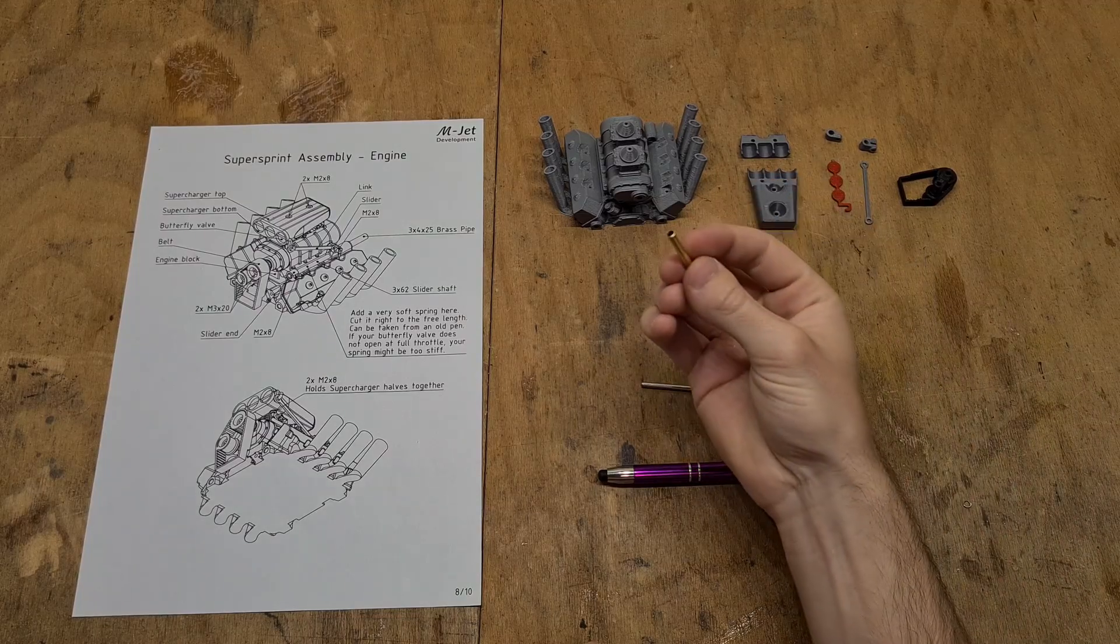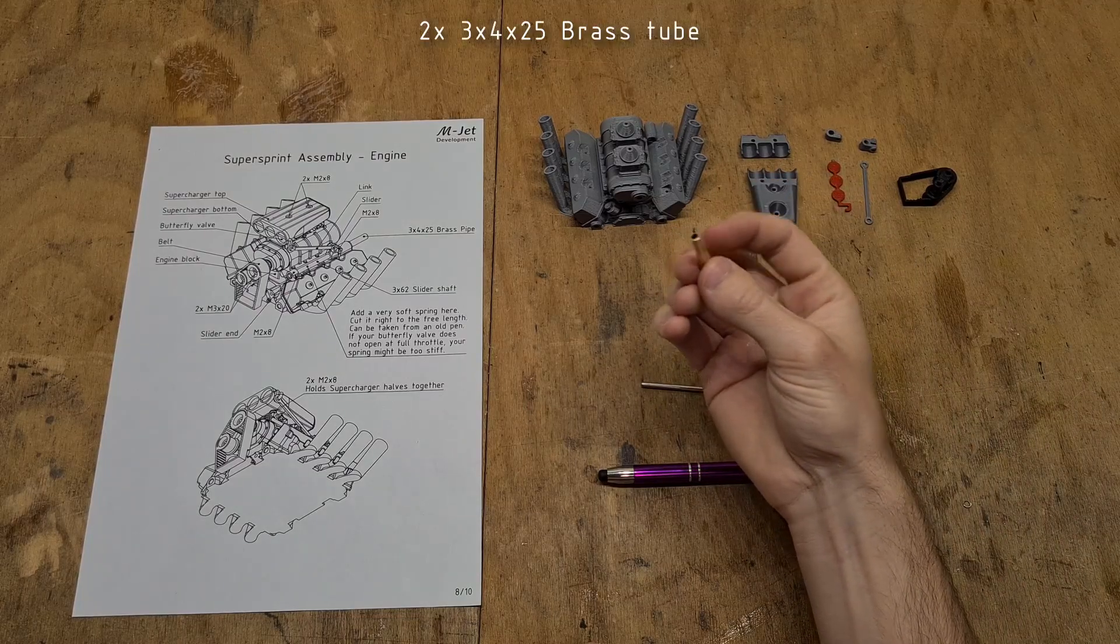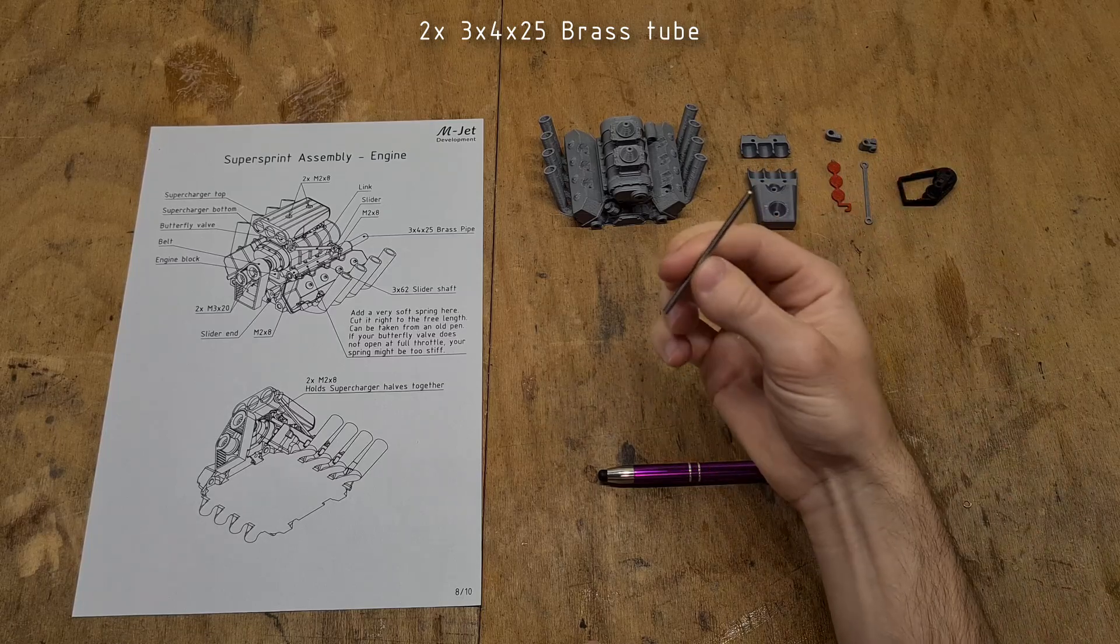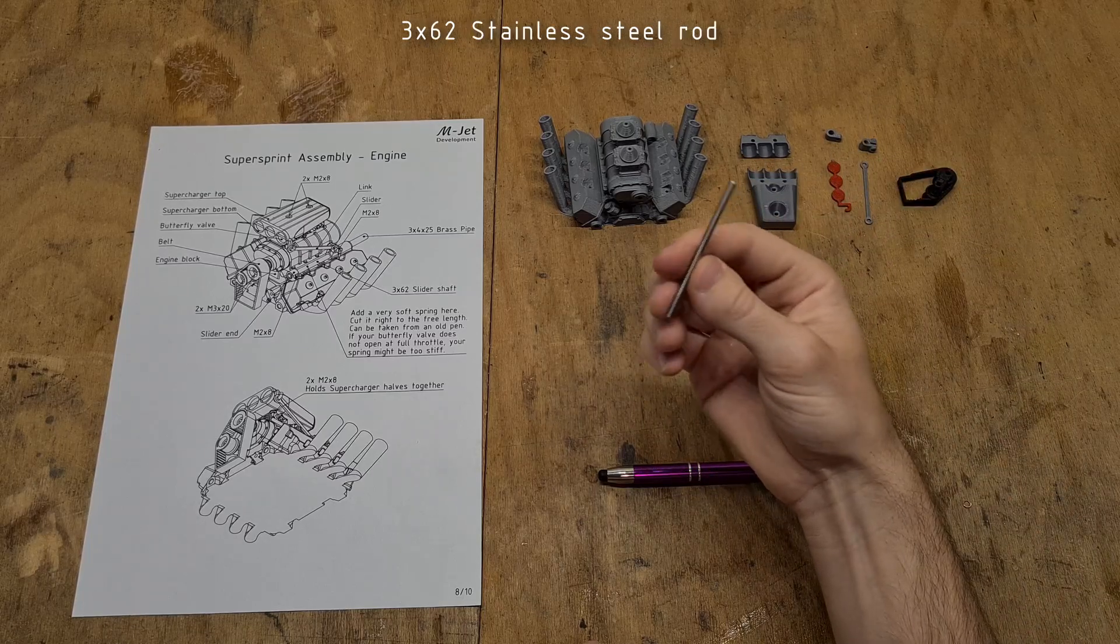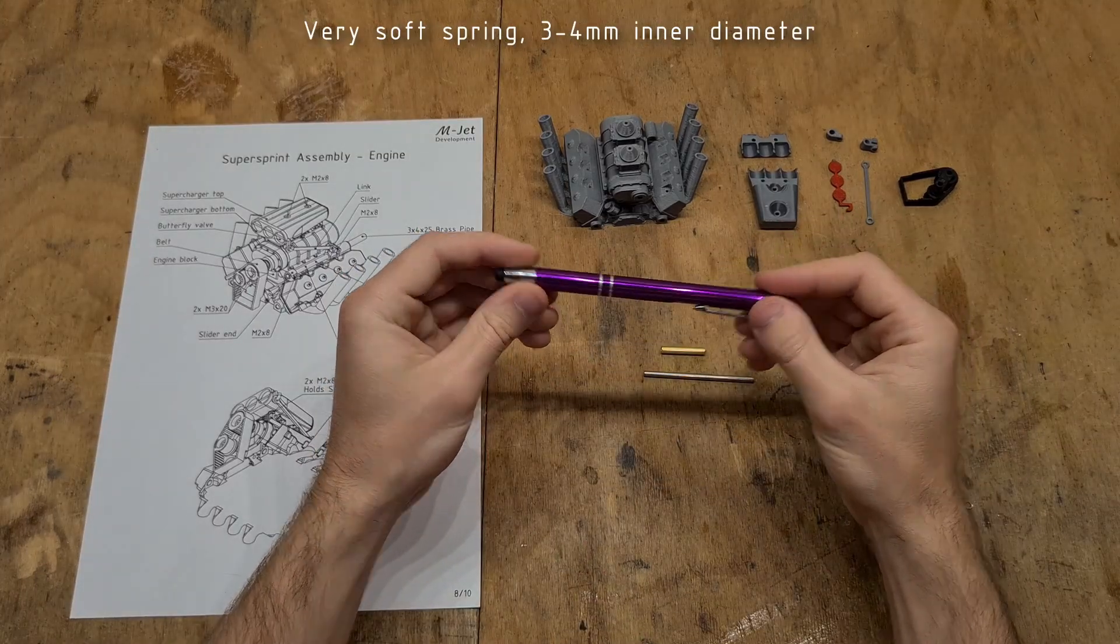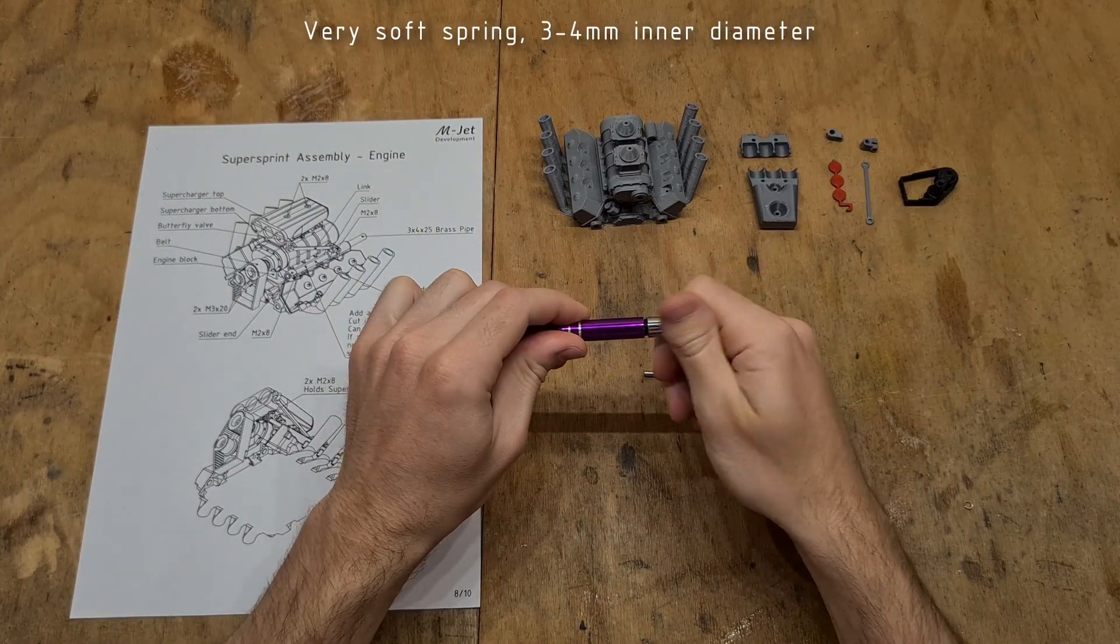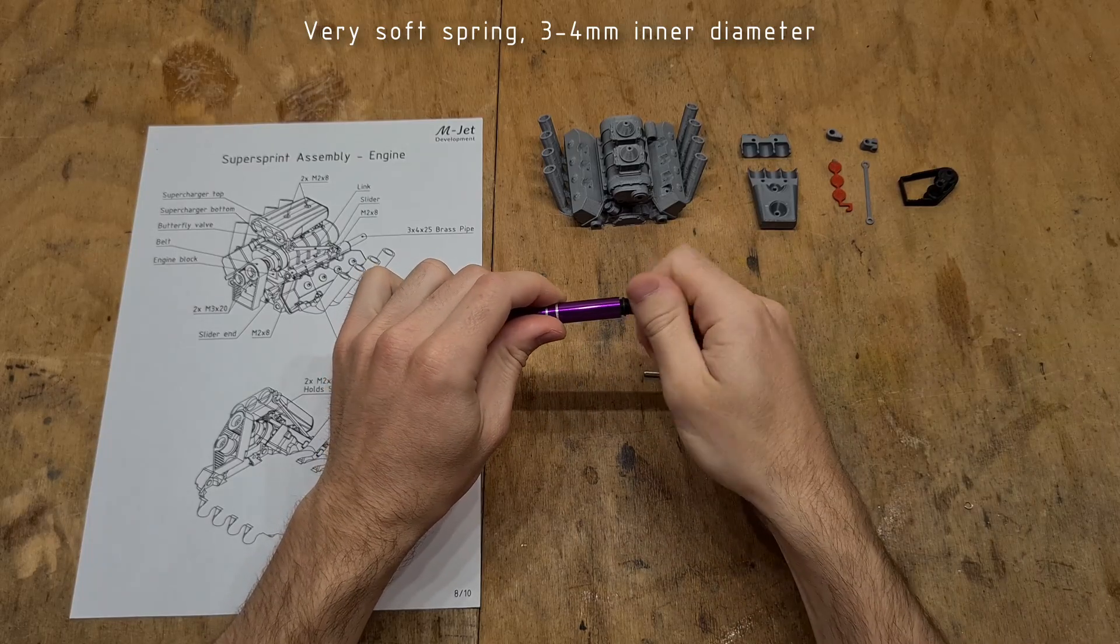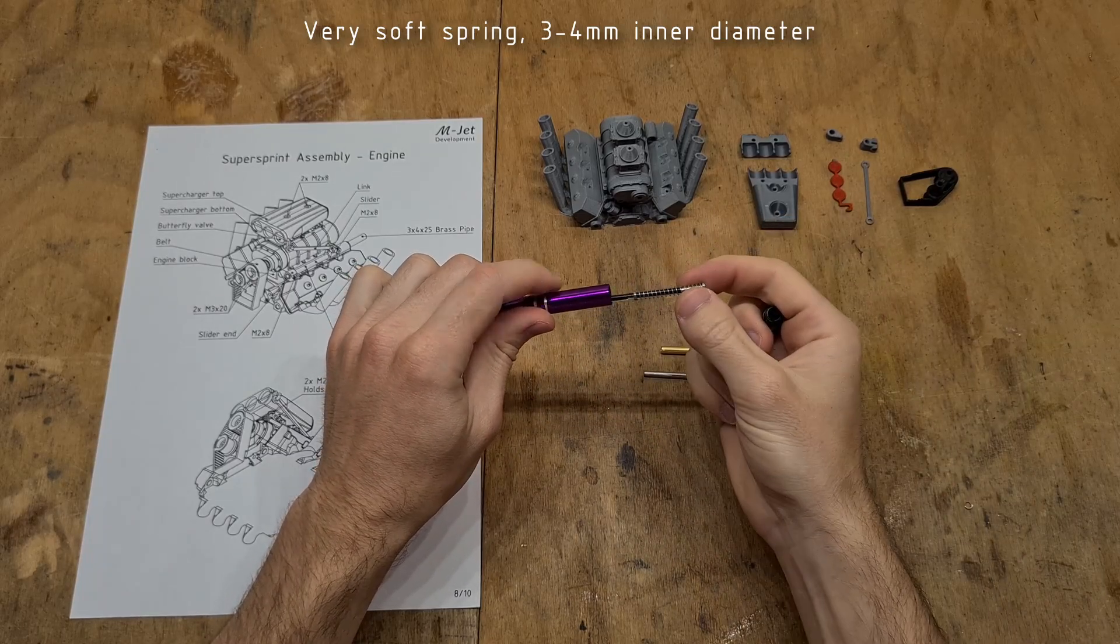Apart from the printed parts, for the engine assembly we will also need two more water cooling tubes which are the same as the previous ones you used for the Supersprint and one 3x62 stainless steel rod. We also need one very soft spring. It needs to be soft enough so that the water pressure can push against it and open the butterfly valve on the supercharger. I am taking one from an old pen.